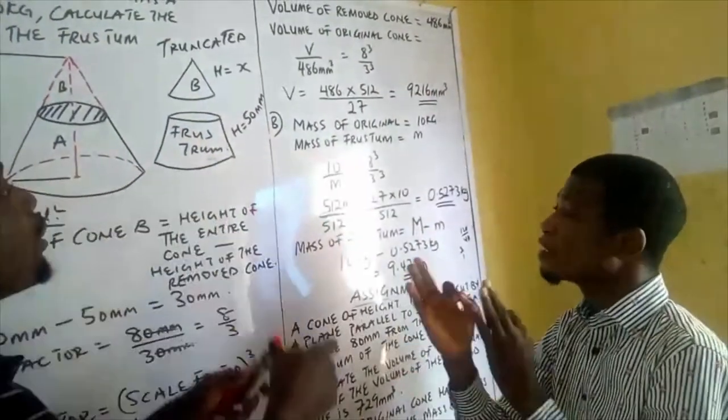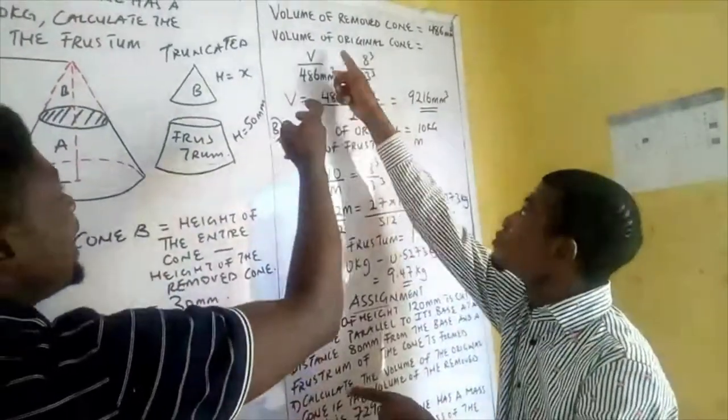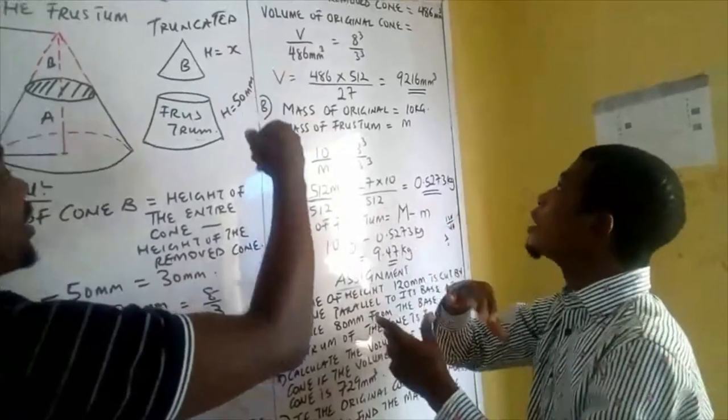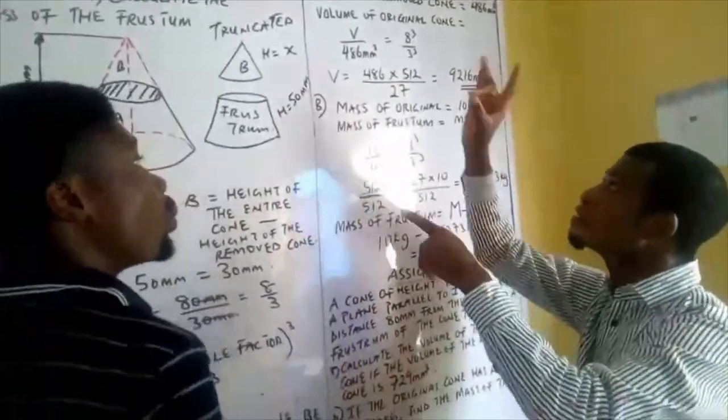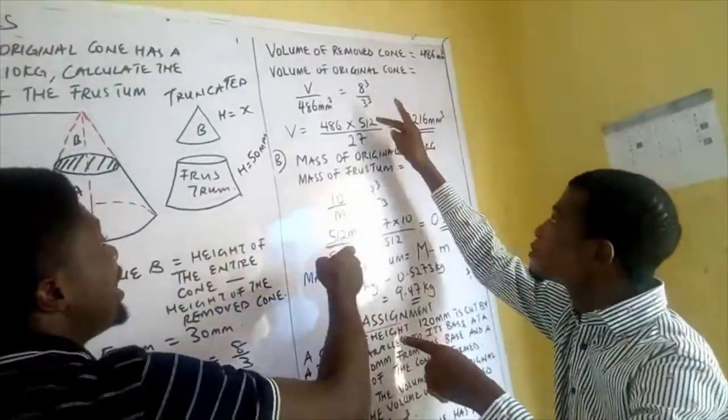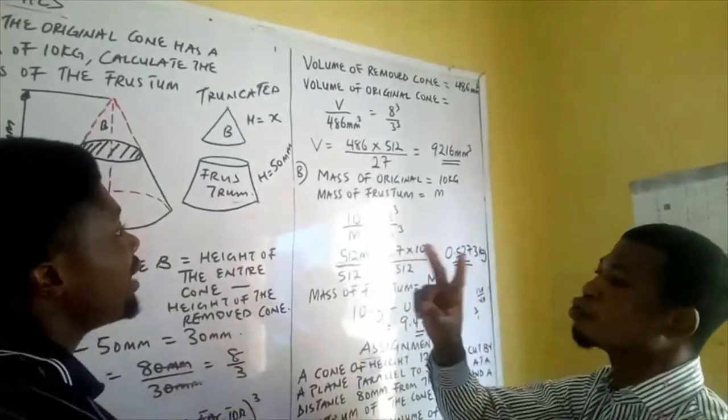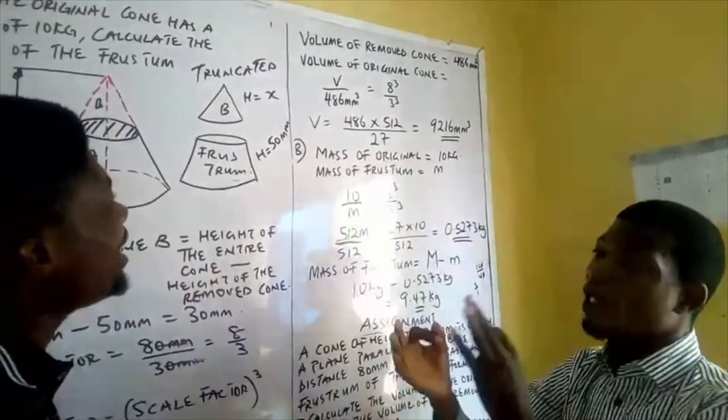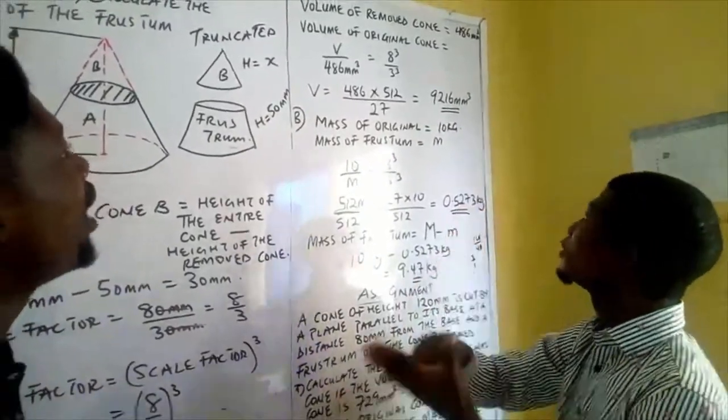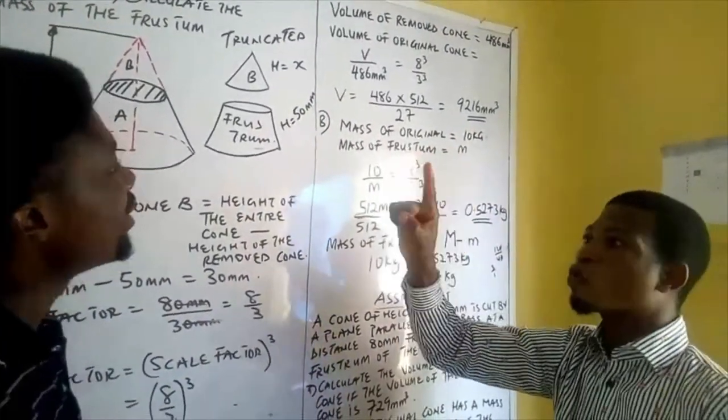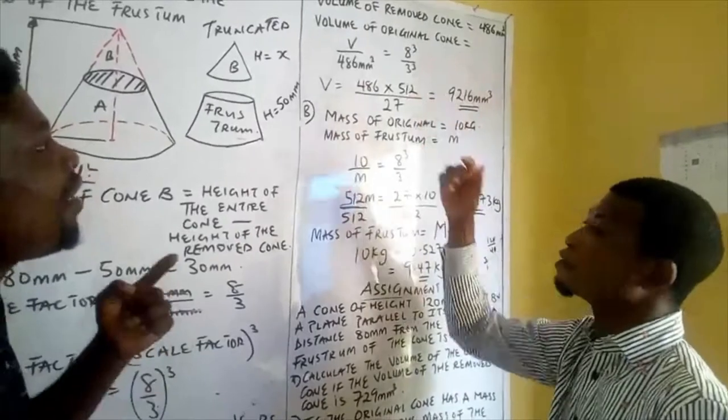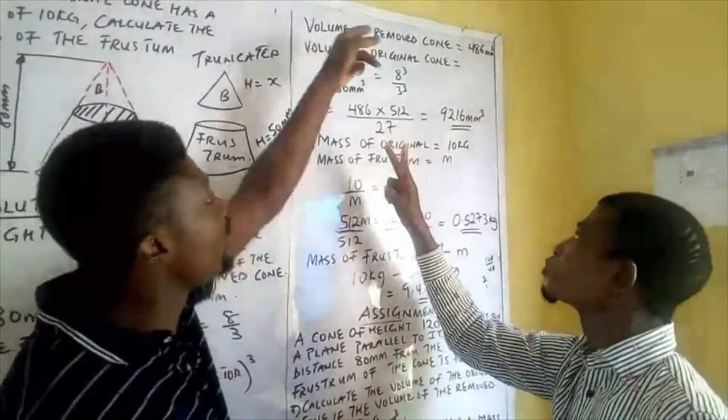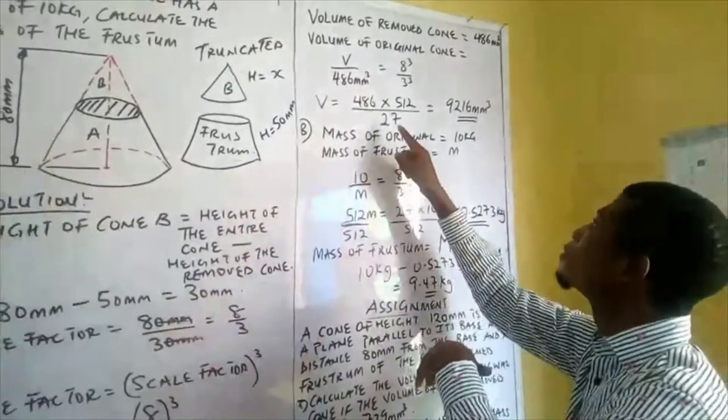If you cross multiply, you have 486 times 512, which is 8×8×8, and 3 cubed which is 27. Divide everything gives you 9216 millimeter cubed. If you put 9216 over 486, you will end up having 512 over 27, which will take you back to the scale factor cubed.